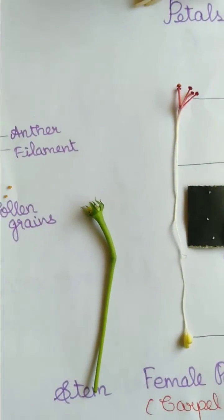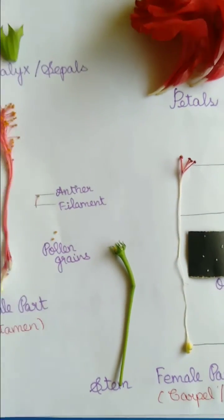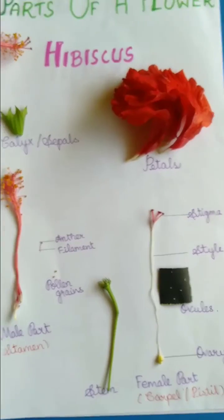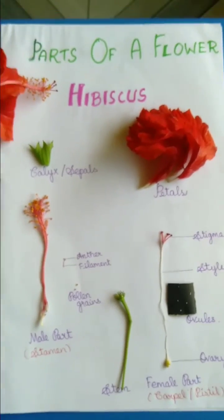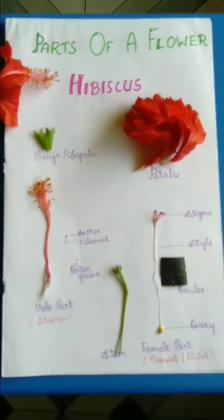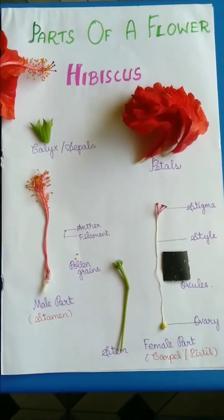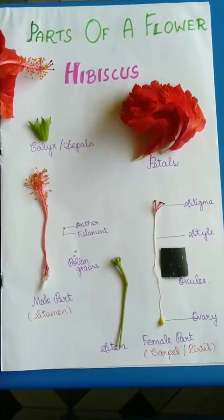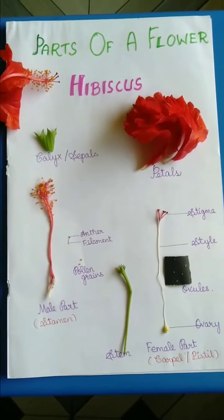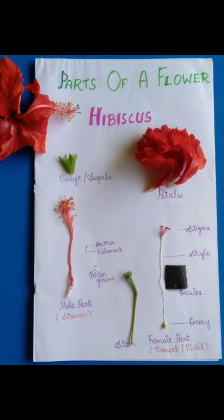Then the long one is called the stem. The parts of the flower are: calyx, petals, stamen, pistil, and stem.